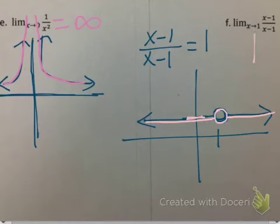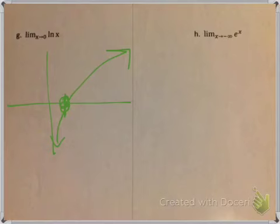Next: natural log of x. A quick sketch — it crosses the x-axis at x=1 and increases left to right. The limit as x approaches 0: the graph goes down, down, down — so it would be negative infinity. I don't have to worry about from the left, since there's no graph to the left of 0.